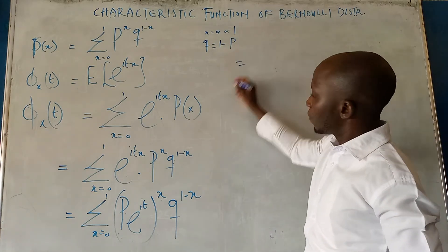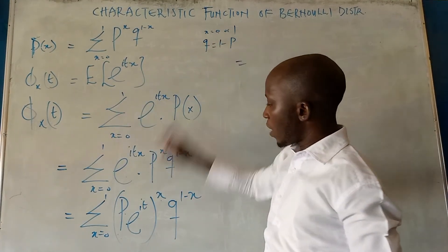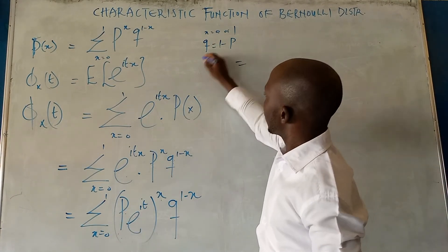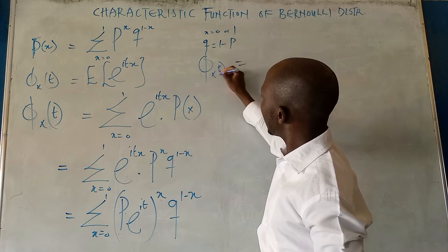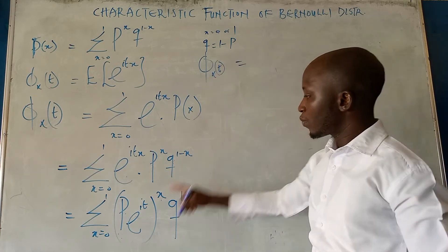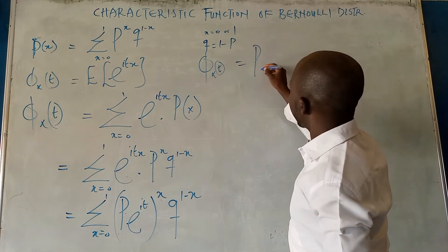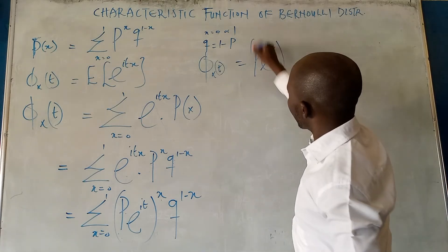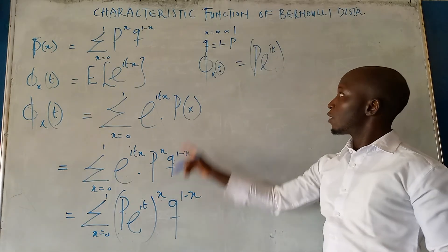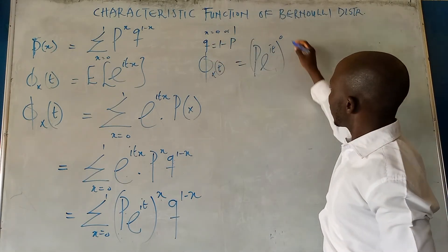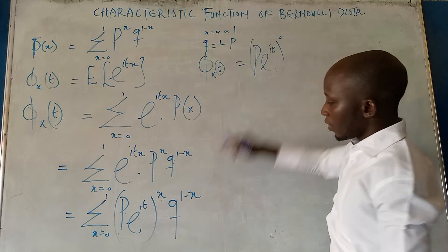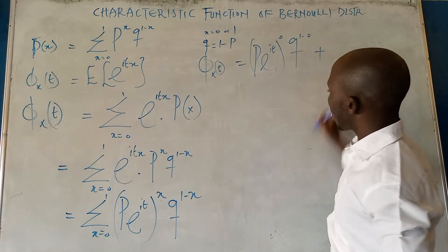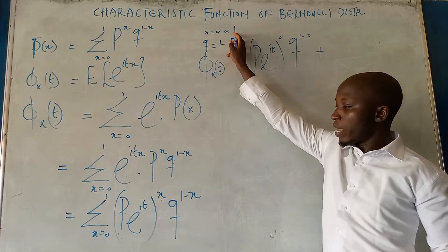Substituting X equals 0 and X equals 1 into this equation, we are going to have φ_X(t) equals: for X equals 0, P·e^(it) raised to power 0 times Q raised to power 1 minus 0; plus for X equals 1.